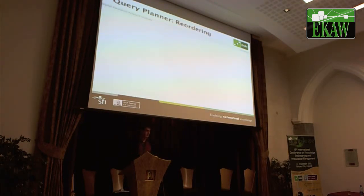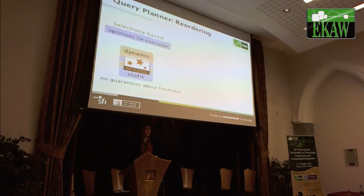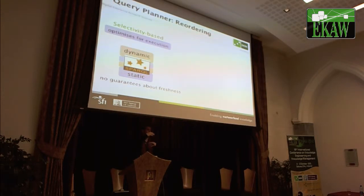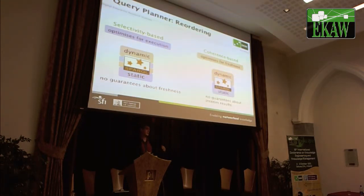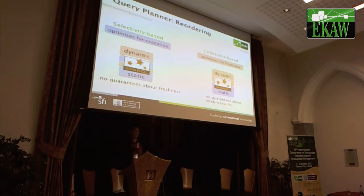That brings us to the reordering strategy. We can use a selectivity-based reordering strategy, which is used in traditional databases and is optimized for query execution. But in our case, since we also want to optimize for freshness, selectivity ordering doesn't guarantee freshness — we can have nested query patterns of static and dynamic ones mixed. So we also looked at coherence-based reordering, where we push static patterns either to the bottom or the top of the query plan. As the slide suggests, selectivity-based reordering seems to favor multi-split strategies, and coherence-based reordering is more suited to single-split strategies.